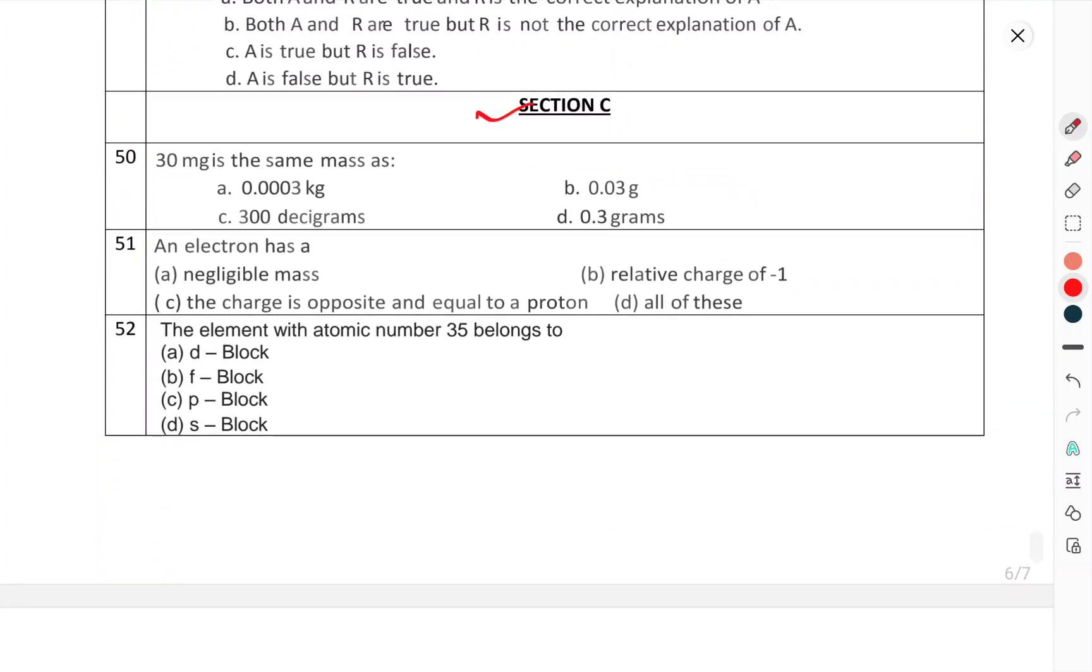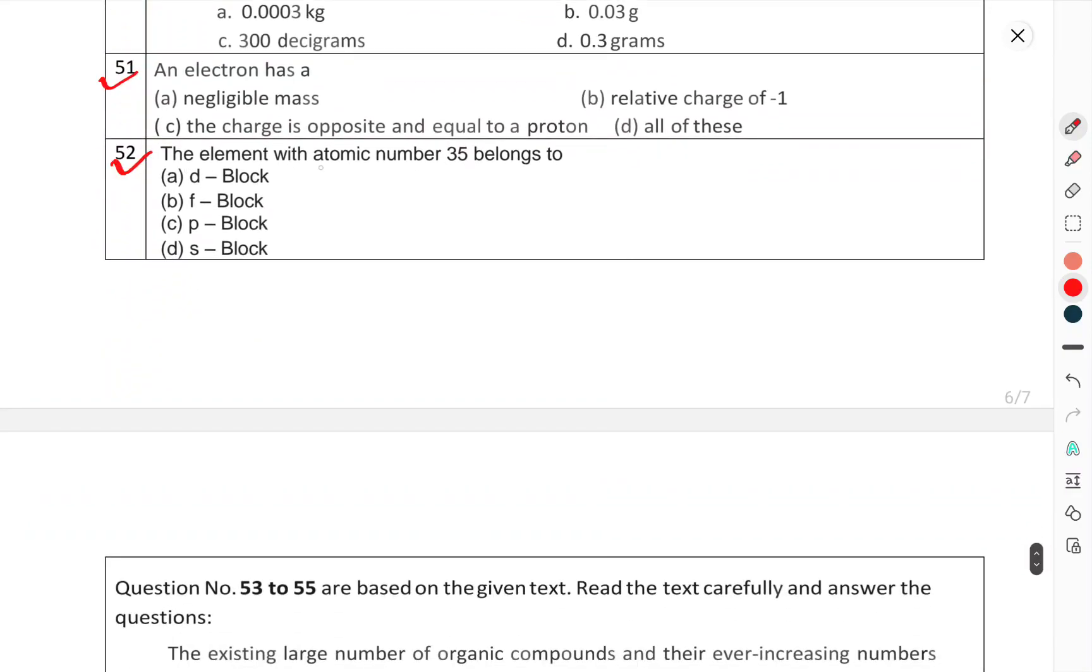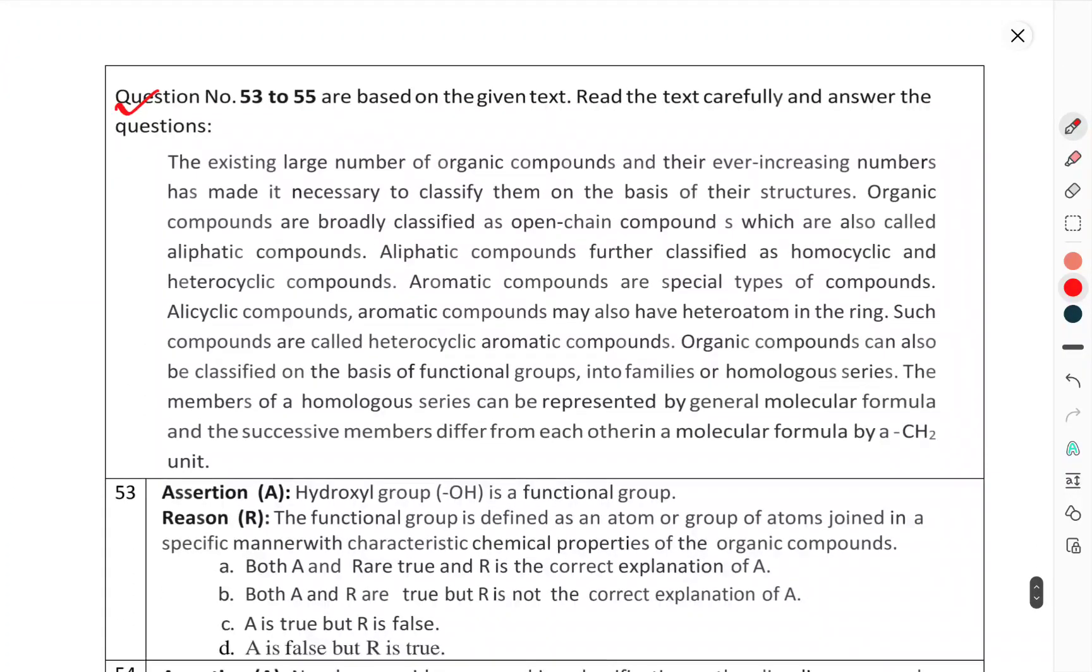Now we have to come to Section C. Question number 50: An electron has the same mass as. Question number 52: The element with atomic number 35 belongs to. Questions 53 to 55 are based on the given text. Read the text carefully and answer the questions.